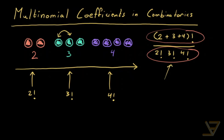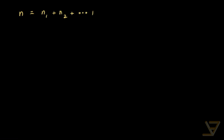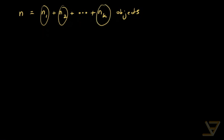Let's prove this general formula rigorously. Say we have n equals n1 plus n2 all the way through to nk objects. Within each group the objects are all the same — indistinguishable — but objects from different categories are distinguishable. We have k categories, and we want to know the number of distinct permutations.